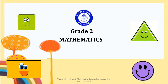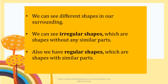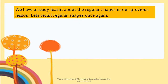Grade 2 Mathematics: Geometrical Shapes. Dear children, we can see different shapes in our surroundings. We can see irregular shapes, which are shapes without any similar parts. Also, we have regular shapes, which are shapes with similar parts. We have already learnt regular shapes in our previous shapes lesson. Let's recall regular shapes once again.